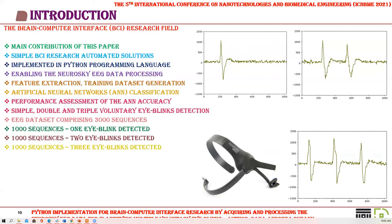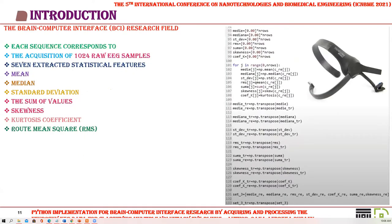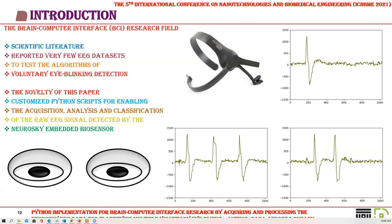Executing these stages resulted in performance assessment of the artificial neural network accuracy for simple, double, and triple voluntary eye blinks detection. It also resulted in an EEG dataset comprising 6,000 sequences: 1,000 sequences of one eye blink, 1,000 sequences of two eye blinks, and 1,000 sequences of three eye blinks. Each sequence corresponds to the acquisition of 1,024 raw EEG samples and seven extracted statistical features: mean, median, standard deviation, sum of values, skewness, kurtosis coefficient, and root-mean-square. The scientific literature reported very few EEG datasets to test algorithms of voluntary eye blink detection. The novelty of this paper resulted from customized scripts for enabling acquisition, analysis, and classification of the raw EEG signal detected by the Neurosky embedded biosensor.